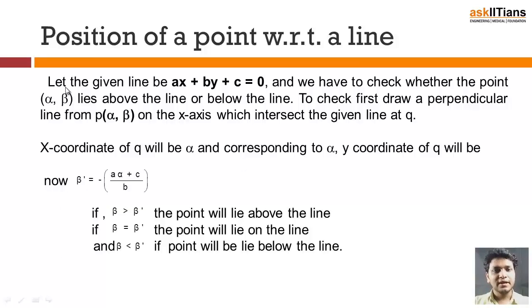Let the given line be ax plus by plus c equals to 0. So we have a straight line, suppose this line is represented by this, and this point will be nothing but minus c by a comma 0.